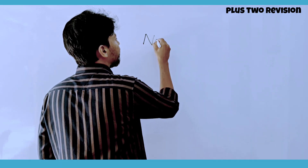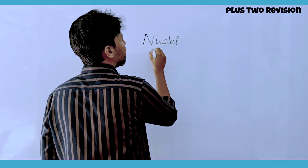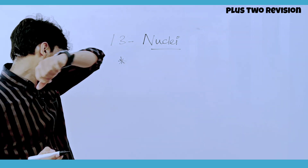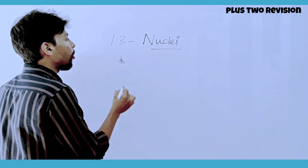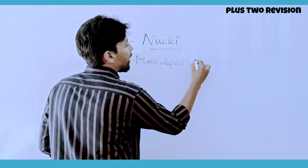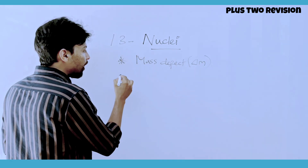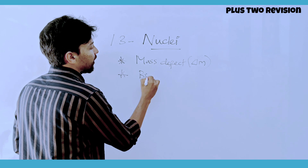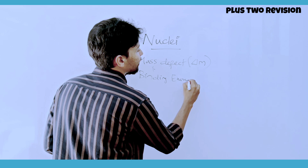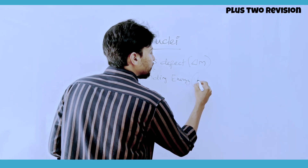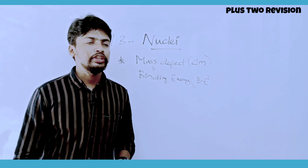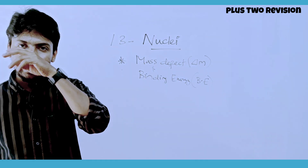We're going to talk about nuclei — chapter 13. Key topics include mass defect and binding energy. The binding energy equation is delta-m times c-squared.